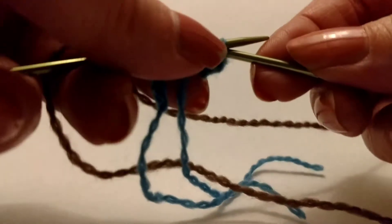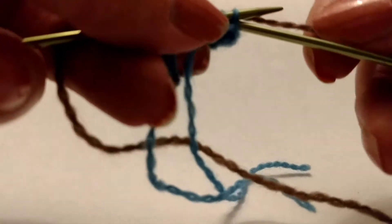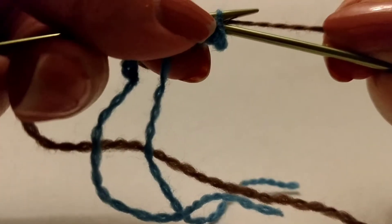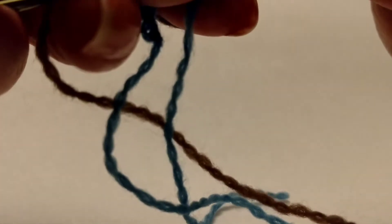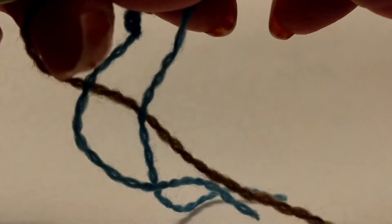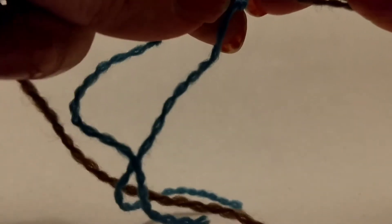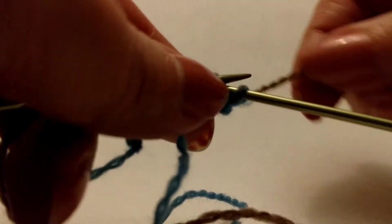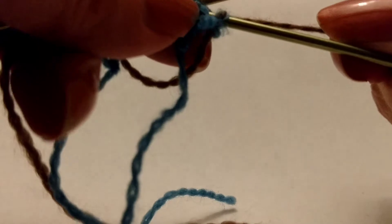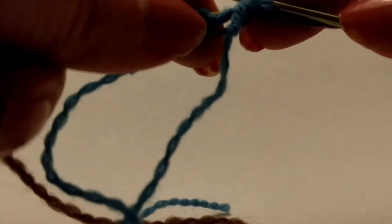But actually all you're going to be doing is yarning over and then picking up the yarn and sliding it off, sliding that stitch off. And you're going to do that for each one of those bumps, because this is just your cast on row.